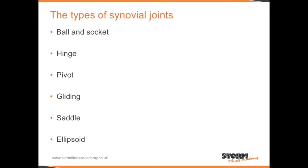The hinge joint has a very limited range of motion and is found in the elbow and the knee. The pivot joint is responsible for rotation and can be found in the neck, where the atlas and the axis meet.